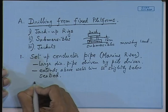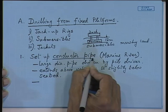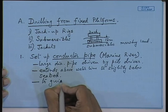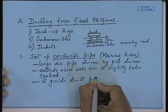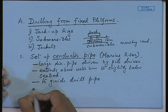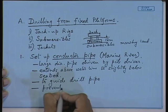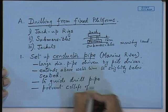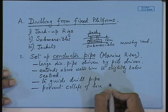The primary function of the conductor pipe is to guide the drill pipe and prevent collapse of the borehole. These are the functions why you have a conductor pipe — to prevent collapse of the borehole.